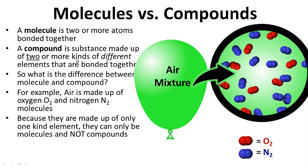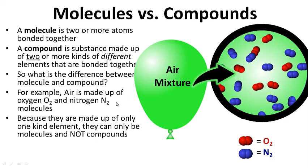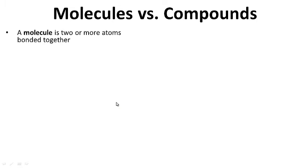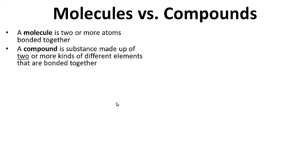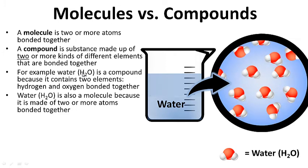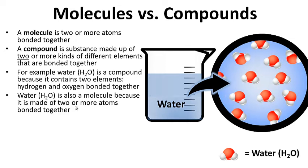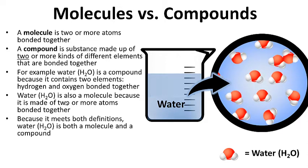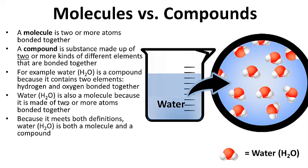A compound is a substance made up of two or more kinds of different elements. Keep these definitions in mind: a molecule is two or more atoms bonded together; a compound is a substance made up of two or more kinds of different elements that are bonded together. Water, H2O, is a compound because it contains two elements — hydrogen and oxygen. It also meets the molecule definition, so water is both a molecule and a compound.